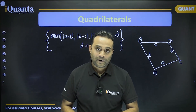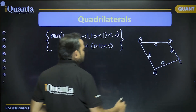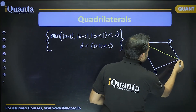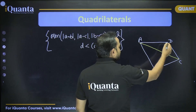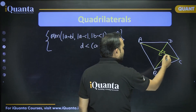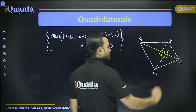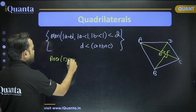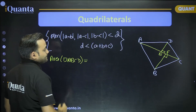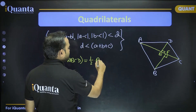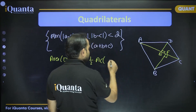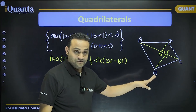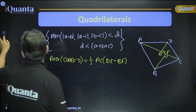Now, apart from side lengths, how do we find the area of a quadrilateral? If diagonal AC is drawn, and DE is perpendicular to AC from vertex D, and BF is also perpendicular to AC from vertex B, then the area of quadrilateral ABCD equals half of AC multiplied by the sum of the perpendicular lengths DE plus BF.